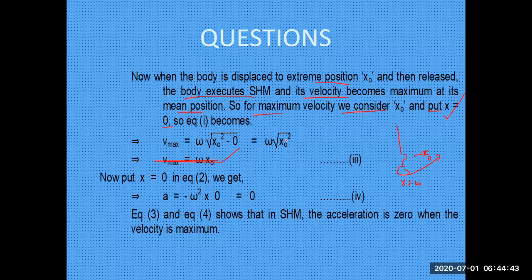If you simplify under the root, then it is omega times x-naught. Now if you put x equal to 0, then x-naught is not equal to 0. We get acceleration a equal to minus omega squared times x. At the mean position where x is 0, this shows that the acceleration is 0.